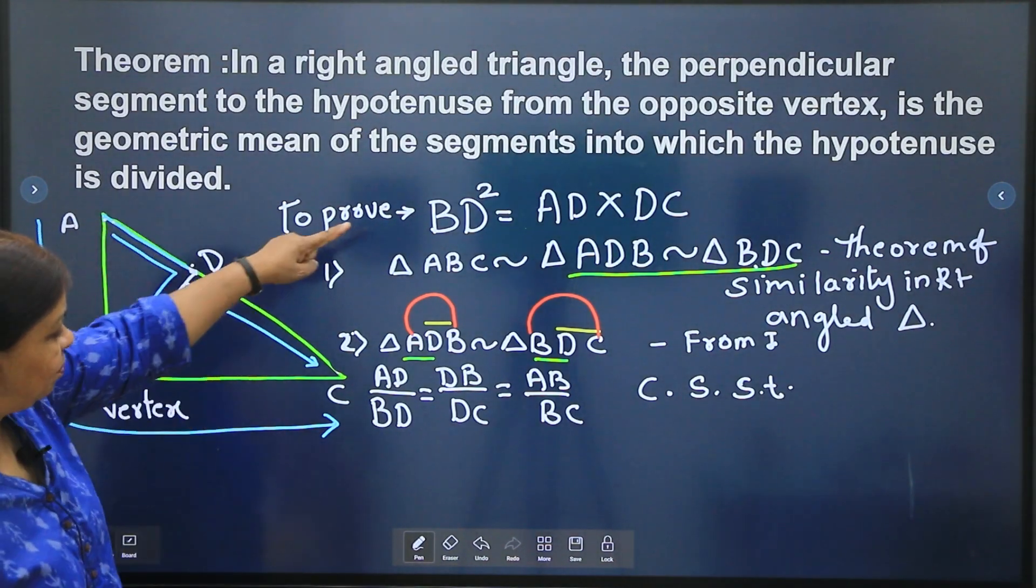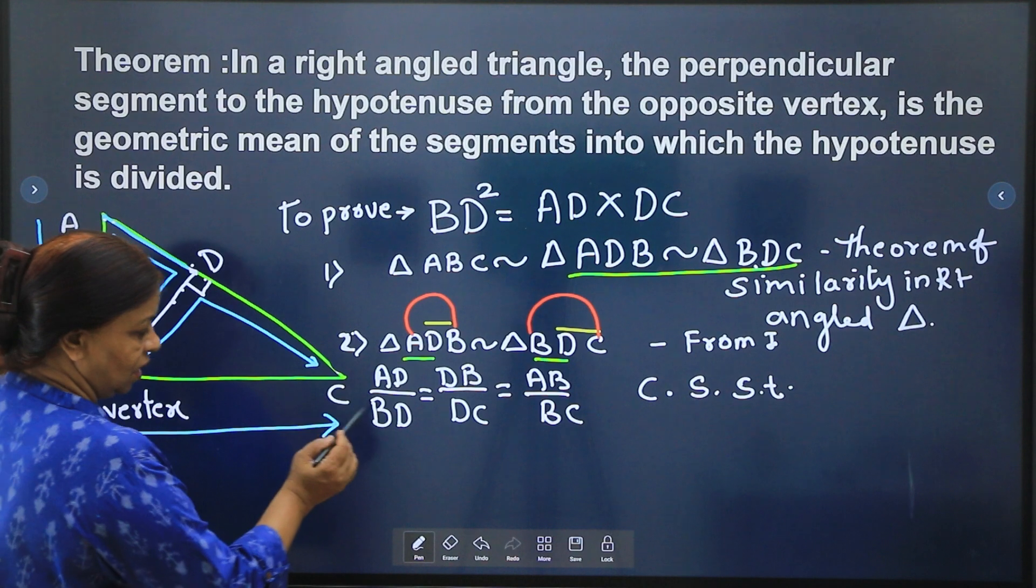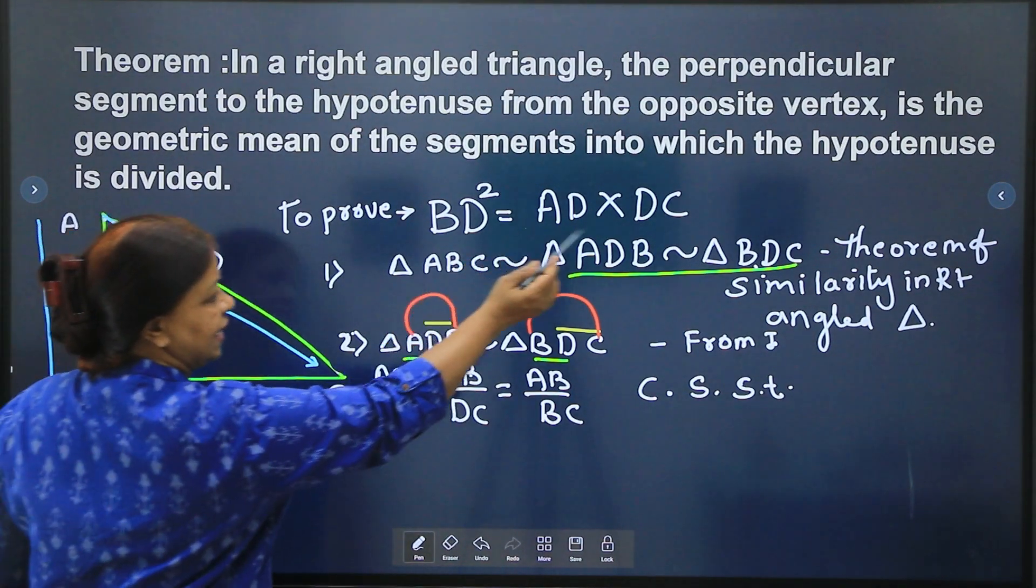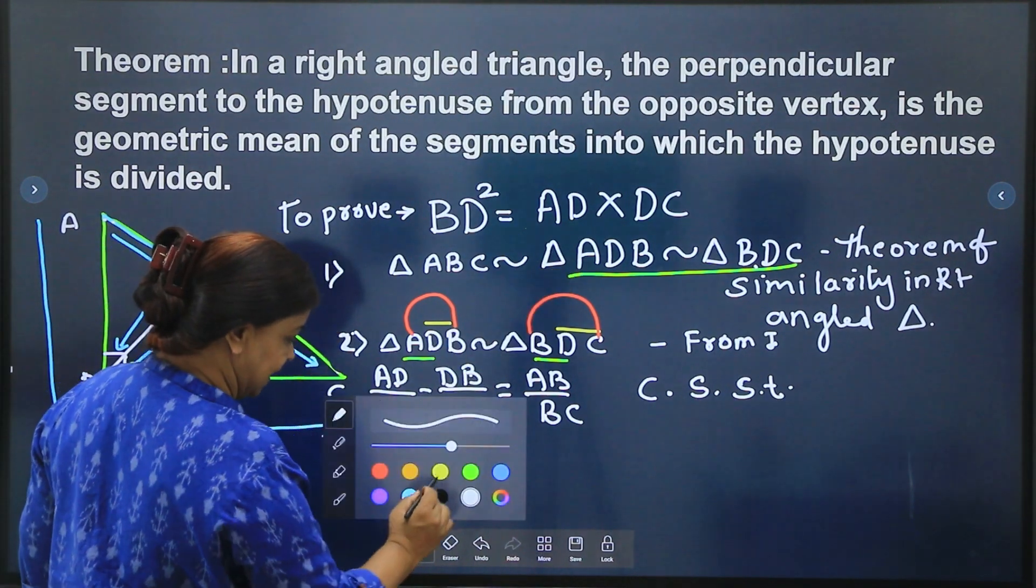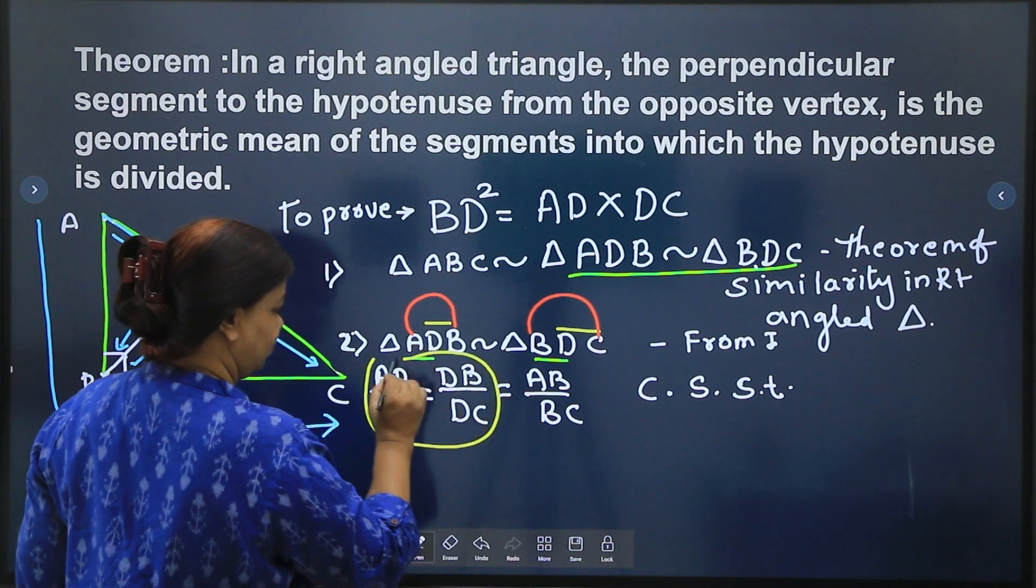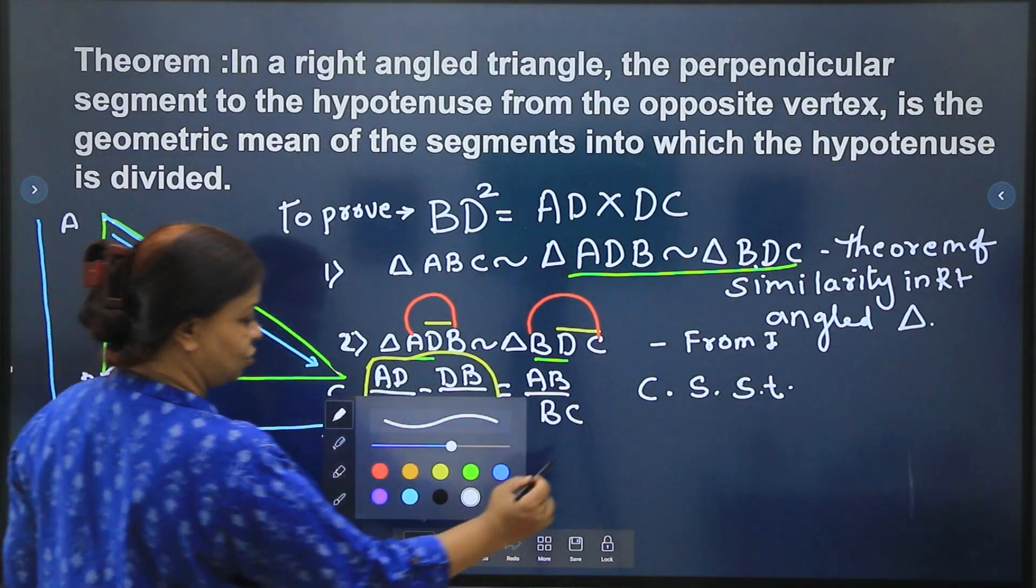Now what we want? BD square we want. Am I getting BD here? BD is here, BD is here and AD and DC. So will I not take this? I will take this ratio. I am going to take this ratio.